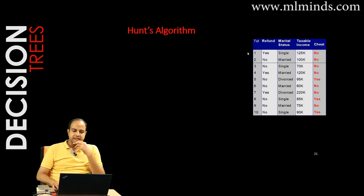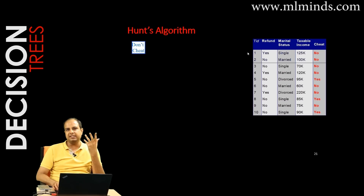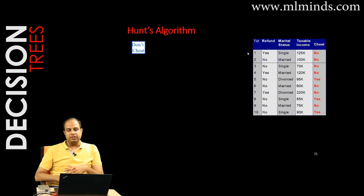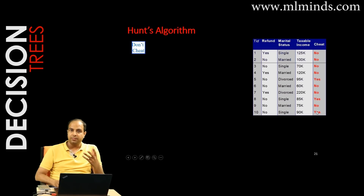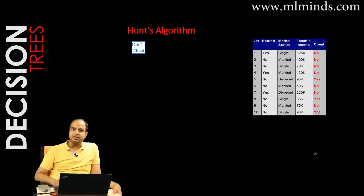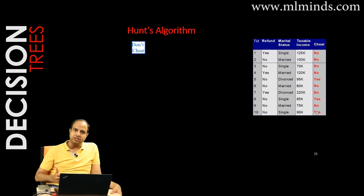If there's no root node — a trivial decision tree — and you have to predict whether someone will cheat or not, you can observe that out of ten instances, seven don't cheat. So the simplest function just returns 'don't cheat.' That gives you 70% accuracy — it's a dumb classifier, but it is a classifier.